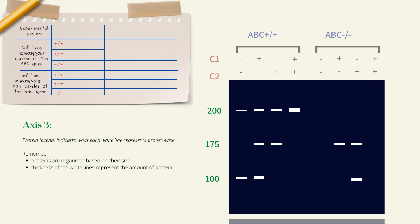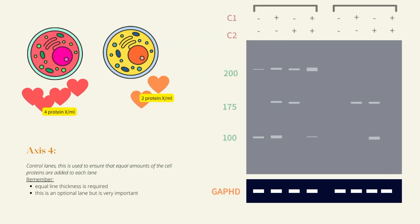Now jumping onto axis number four, because we will return to axis number three in a bit. Axis number four is optional, but very important axis. Great research will always have control groups, ways to prove the validity of their results. That all chemicals, cells, or techniques that they're using are sound and have not gone bad.